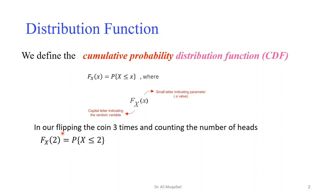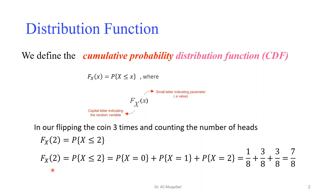In the experiment of flipping a coin three times and counting the number of heads, the CDF evaluated at 2 means finding the probability of being 2 or less. For that specific distribution, the probability of the CDF at 2 equals the probability of being less than or equal to 2, which includes 0, 1, or 2. Substituting the numbers, we get 7 over 8.